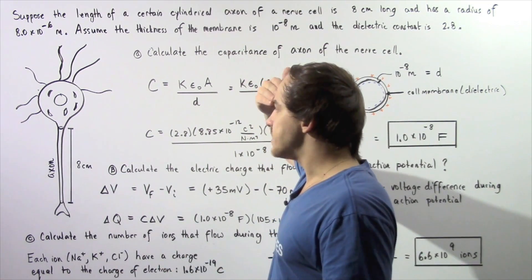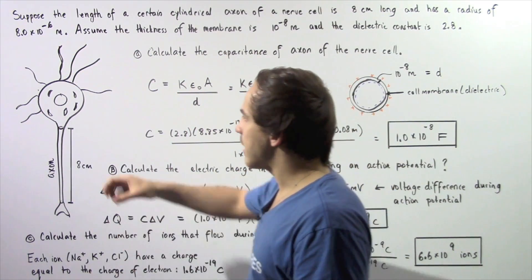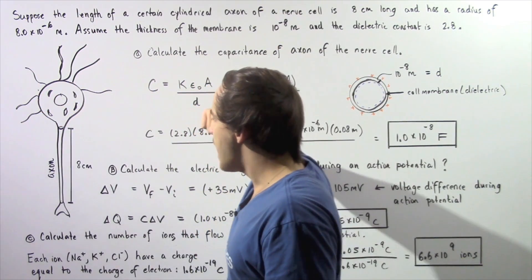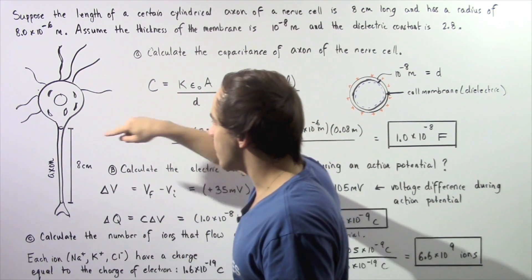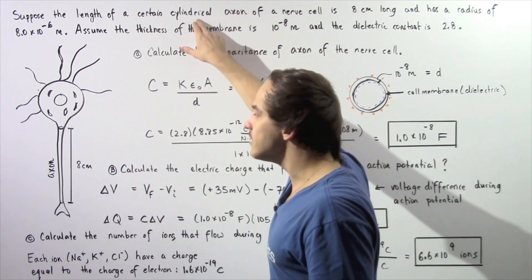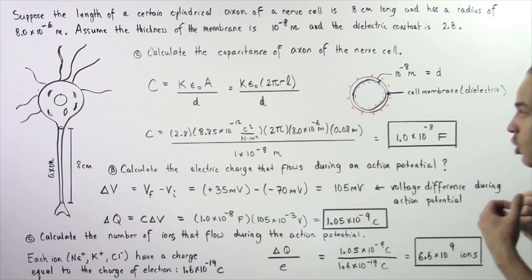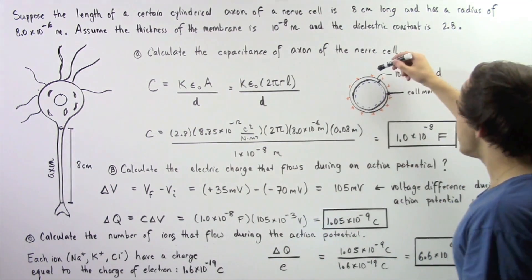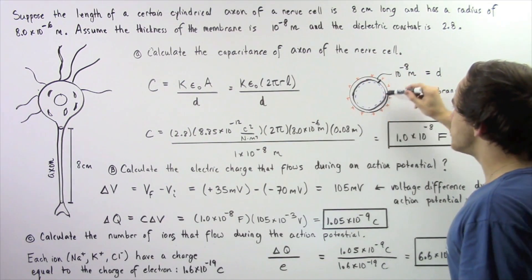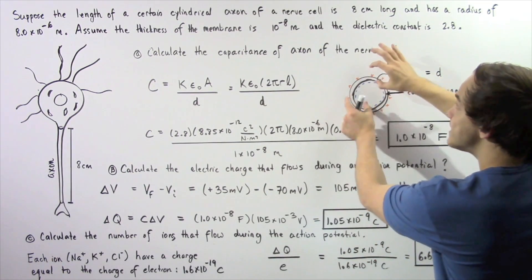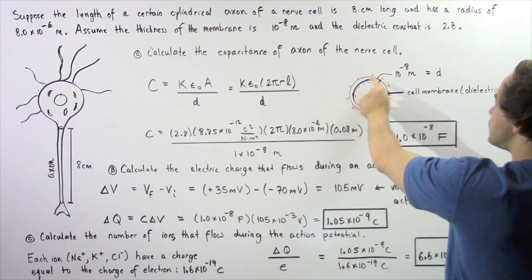Let's look at a sketch of our nerve cell. We have the dendrites, which receive signals from other cells; the cell body that houses the nucleus and other organelles; and the axon as well as the synapse. The axon is the region we're focusing on — it has a length of 8 centimeters and we're assuming it's a cylinder. Taking a cross-section of our axon, when the axon is at its resting potential, the outer region of the membrane is at a positive charge and the inner region has a negative charge, like a cylindrical parallel plate capacitor.